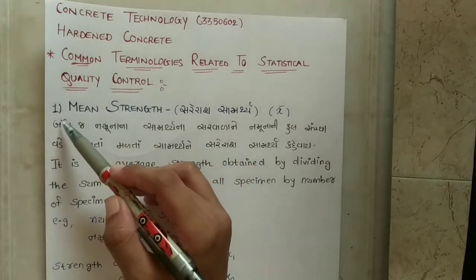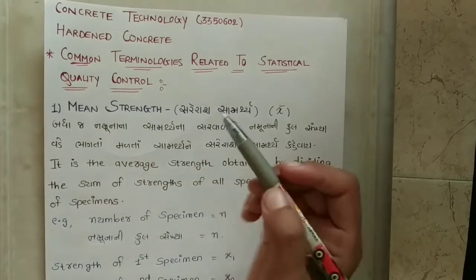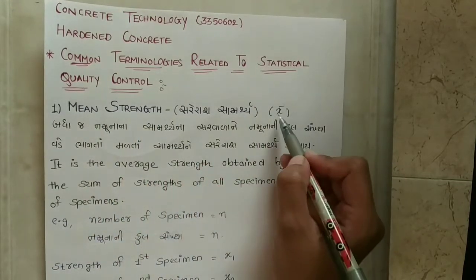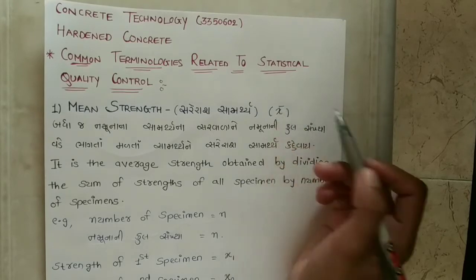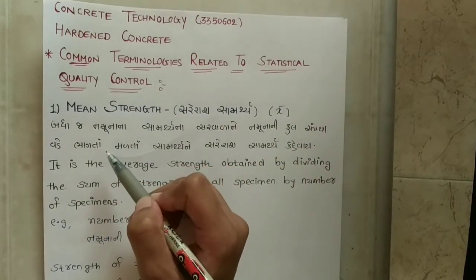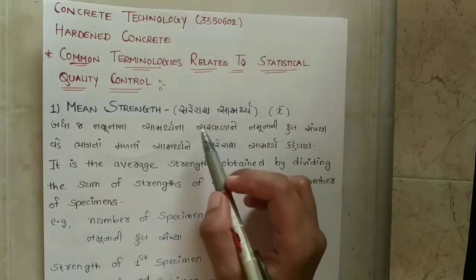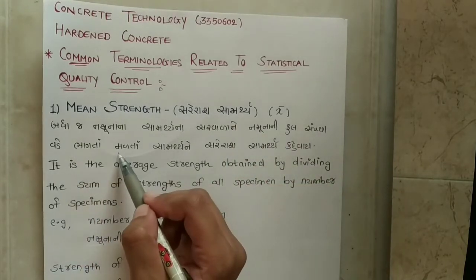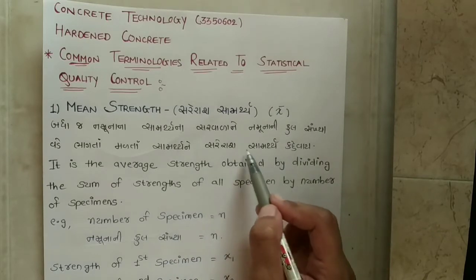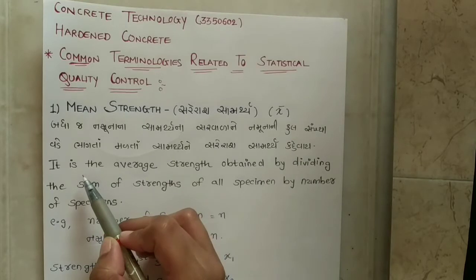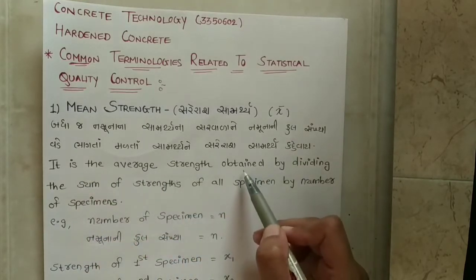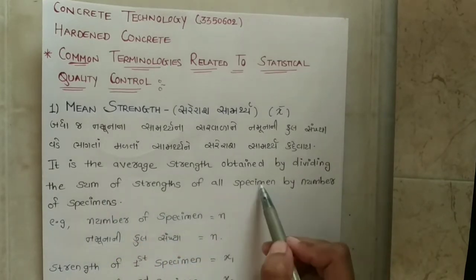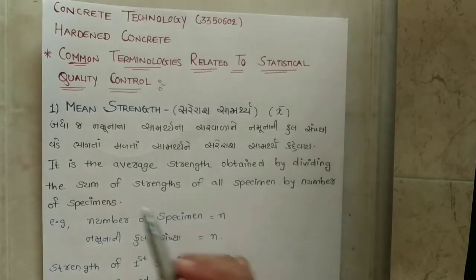The first terminology is mean strength. Mean strength is denoted by x bar. Mean strength is the average strength obtained by dividing the sum of strengths of all the specimens by the number of specimens.